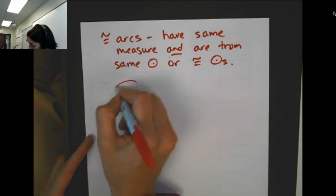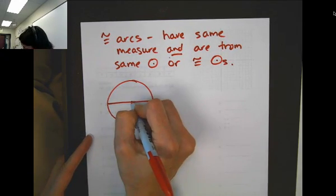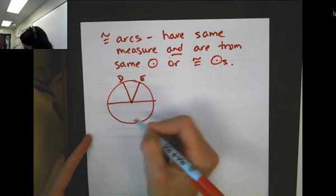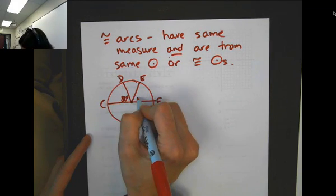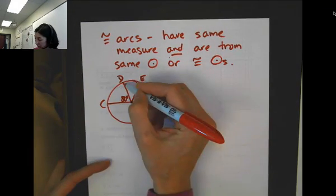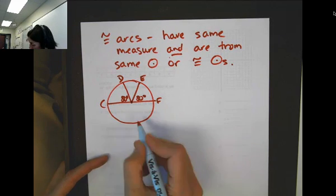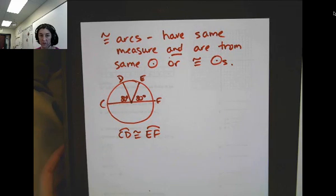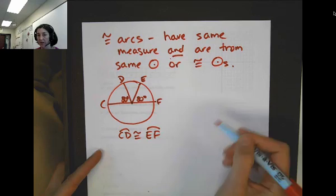Here's an example where I have the center of the circle here and put a couple radii here: D, E, C, F. If this is 80 degrees and this is 80 degrees, these are two radii of the same circle and the central angles have the same measure. So arc CD is congruent to arc EF. That would also be true if it was on two separate circles, but they were congruent because they had the same radii.